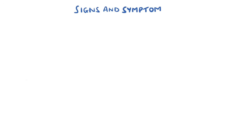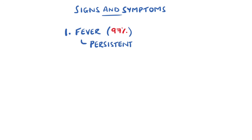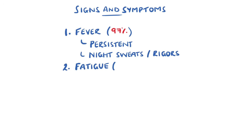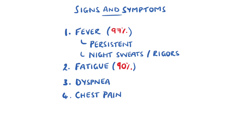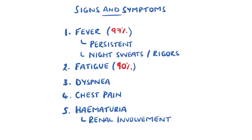Fever is present in 97% of people, often being persistent with no obvious other cause, and may be associated with rigors or night sweats. Fatigue is common, and patients may also complain of dyspnea or shortness of breath on exertion, and chest pain in some cases. Haematuria is also possible if there is renal involvement.